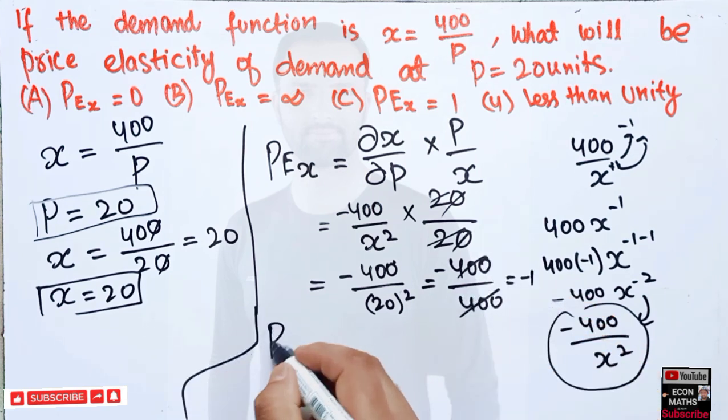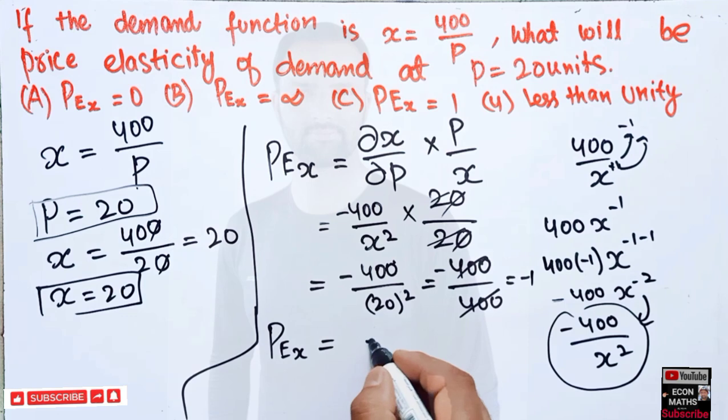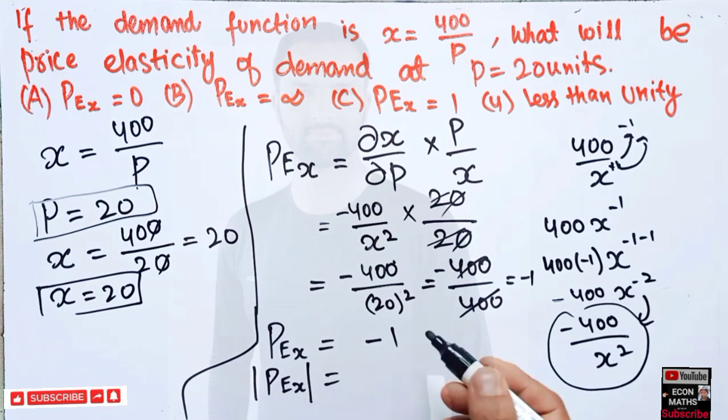So price elasticity of demand for good x is equal to minus 1. Since no option of minus 1 is here, what we do is just take the absolute value. The absolute value of minus 1 is 1.